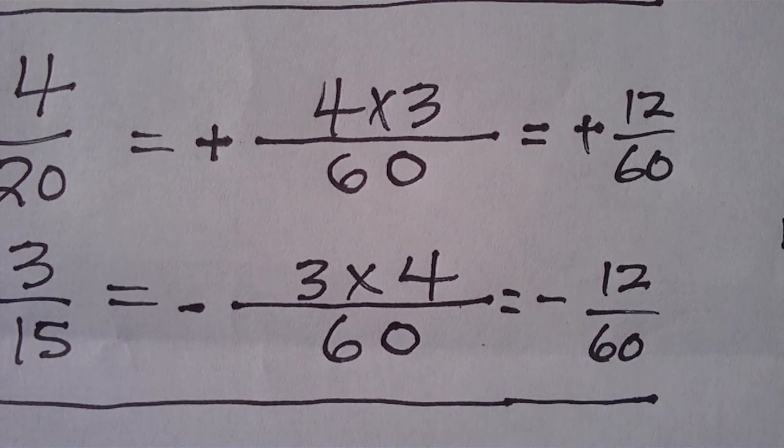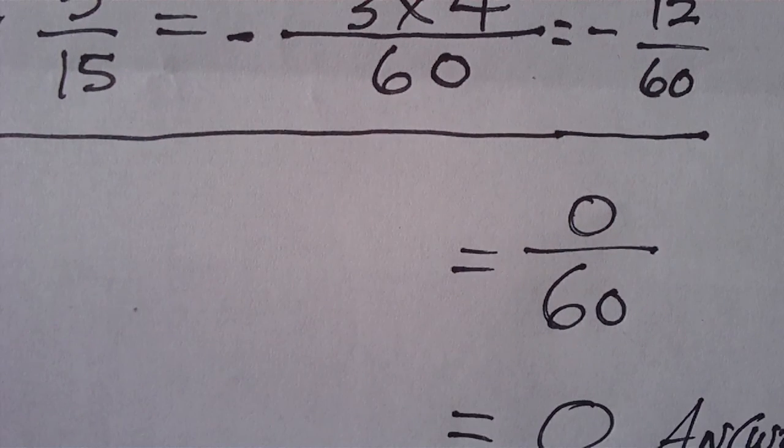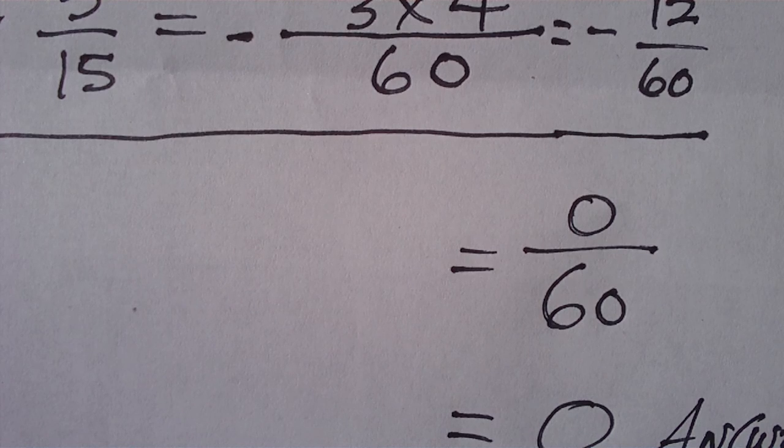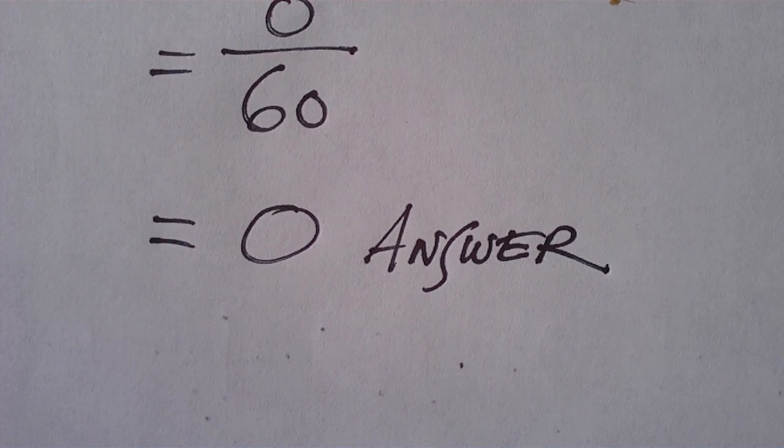Then, we got plus twelve sixtieths and minus twelve sixtieths. Twelve minus twelve is zero. So, our answer is zero over sixty, which is zero. Thanks a lot.